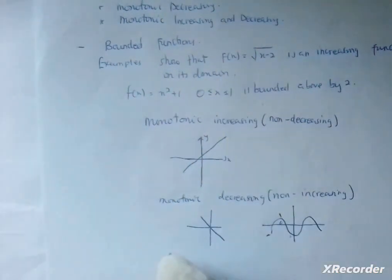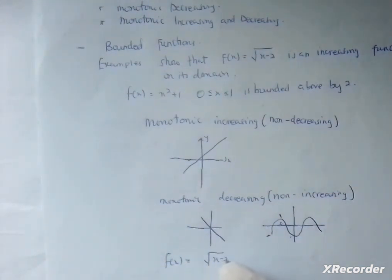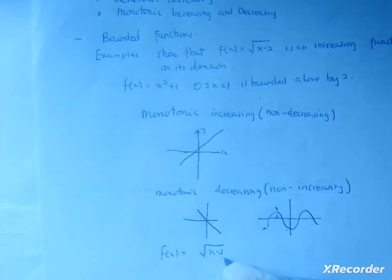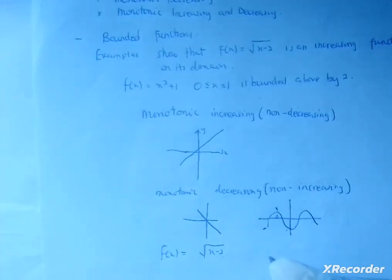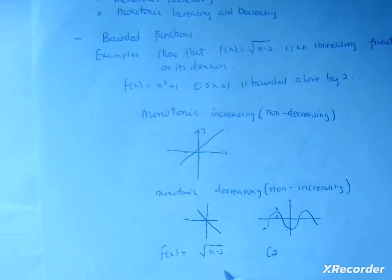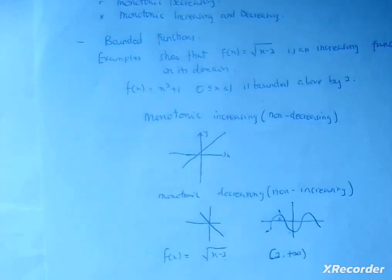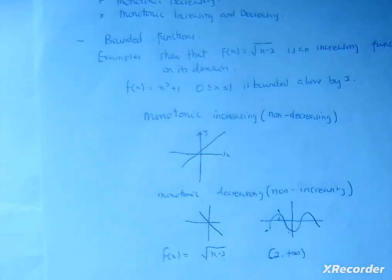Let's look at this example: show that f(x) = √(x − 2) is an increasing function on its domain. First we find the domain. Since this is a radical function, the expression inside cannot be negative, so x − 2 ≥ 0, meaning x ≥ 2. The domain is [2, +∞). Now we must show that it is an increasing function on this domain.